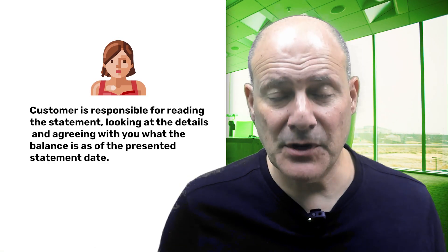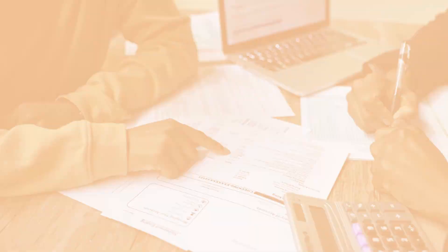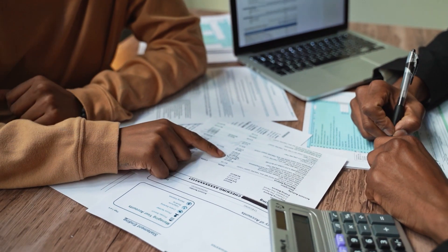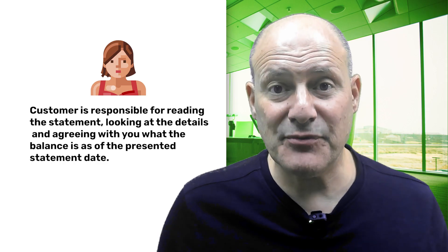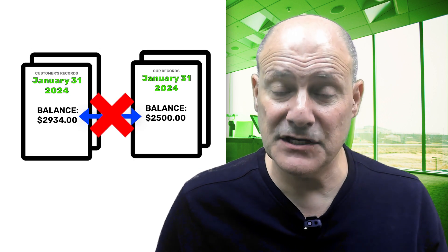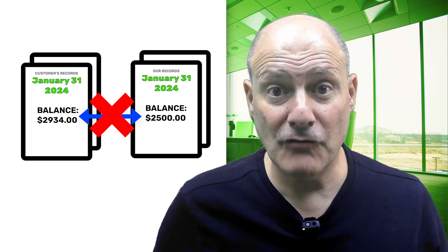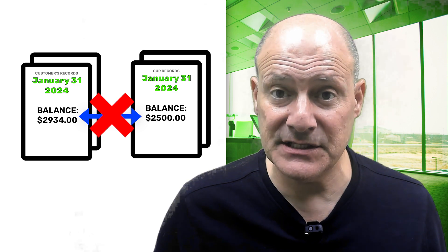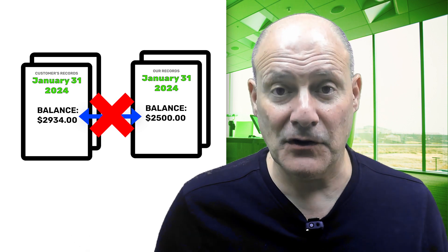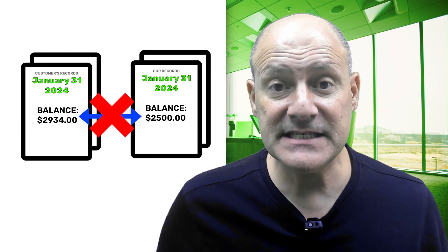But assuming you have been reconciling, from that point forward you have to consider point number two. The second point is that the customer is responsible for reading the statement, looking at the details, and agreeing with you what the balance is as of the presented statement date. And thirdly, if there's any discrepancy that the customer notices, they are responsible for getting on the phone with you and discussing any differences in the balance or the transactions listed on the statement as of the statement date.